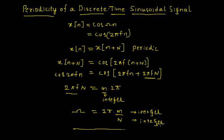Here m is an integer and N is also an integer — the ratio of two integers is a rational number. N is the fundamental period. In numerical problems, we express ω as a rational multiple of 2π; if we can, the signal is periodic and N is the fundamental period. If we cannot, the signal is not periodic.